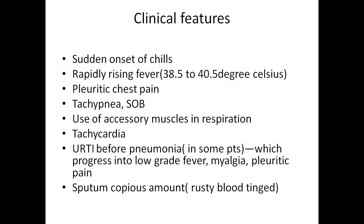There will be tachypnea, shortness of breath or dyspnea, and use of accessory muscles in respiration, especially seen in children. The person will also have tachycardia. In some patients, there will be an upper respiratory tract infection before pneumonia, which progresses into low-grade fever, myalgia, and pleuritic pain. Patients with pneumonia produce a lot of mucopurulent sputum that is rusty and blood-tinged in color.